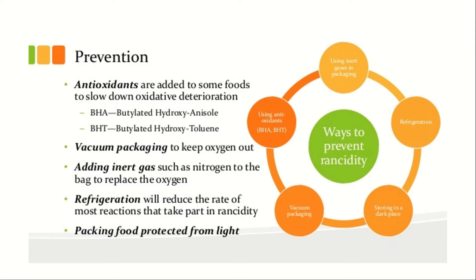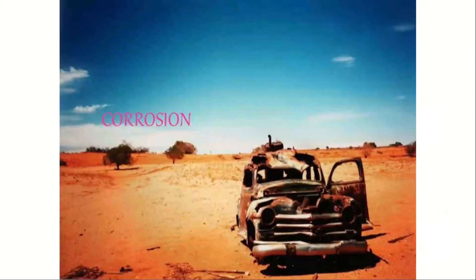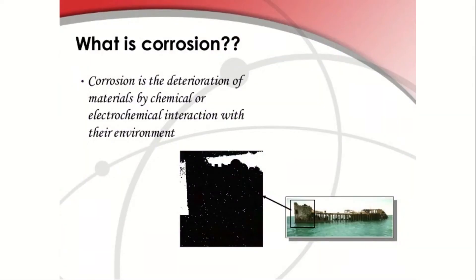Next, let us know about the very important topic — corrosion. Corrosion is the deterioration of materials by chemical or electrochemical interaction with their environment. For example, rusting.